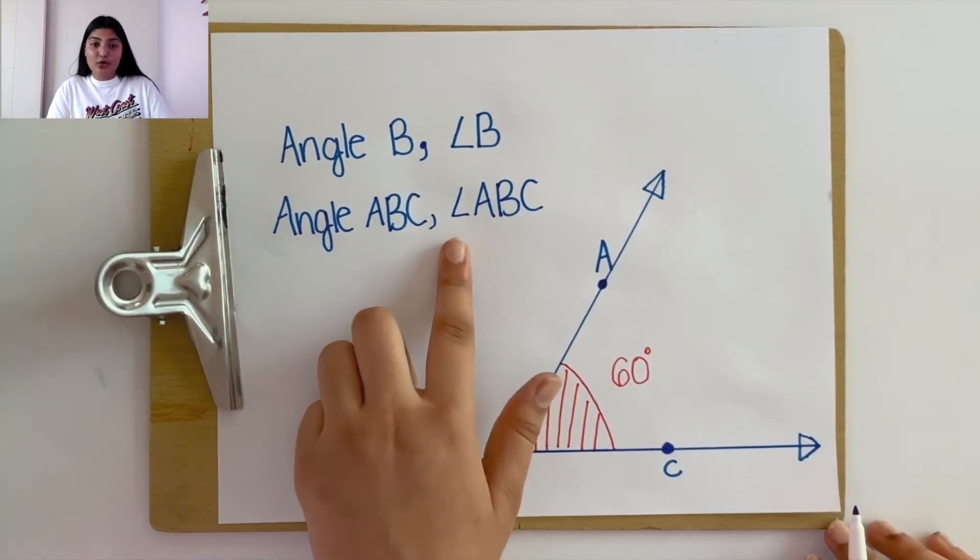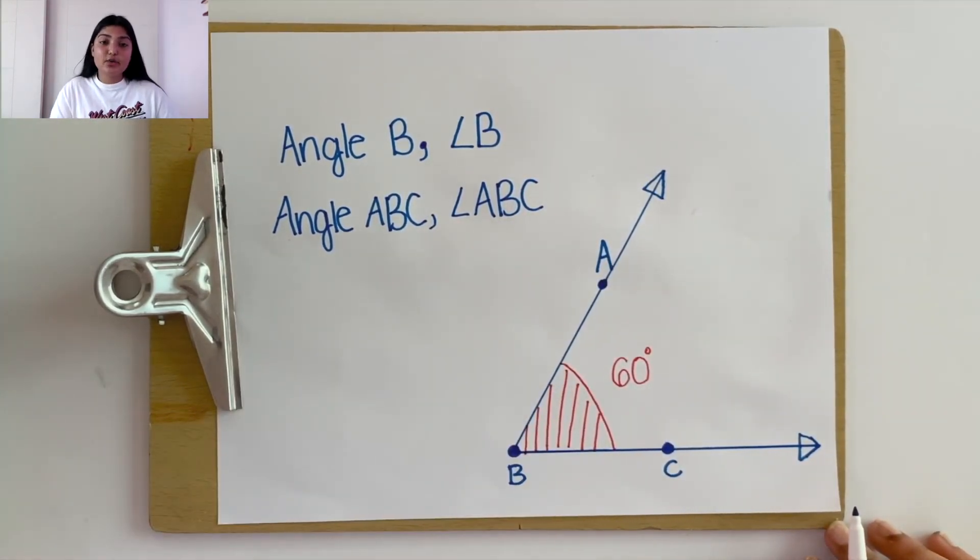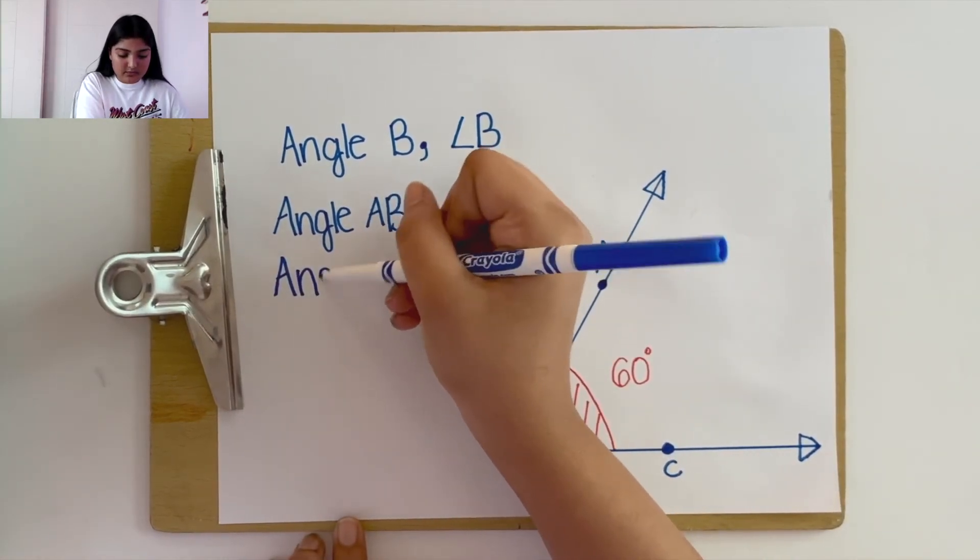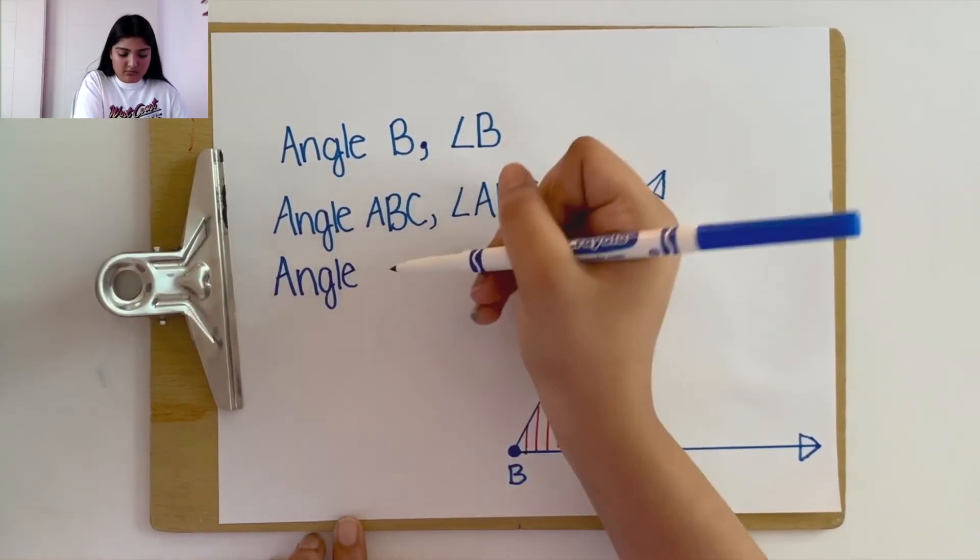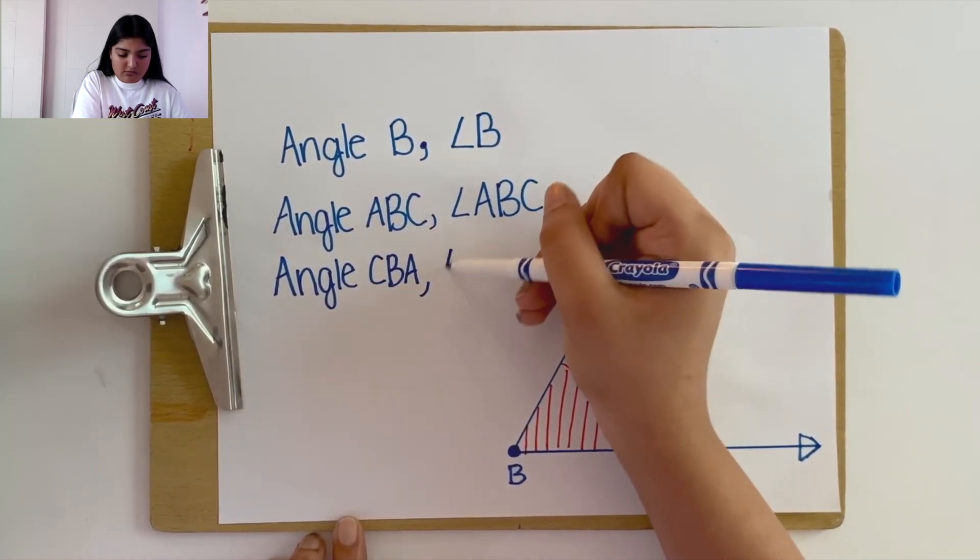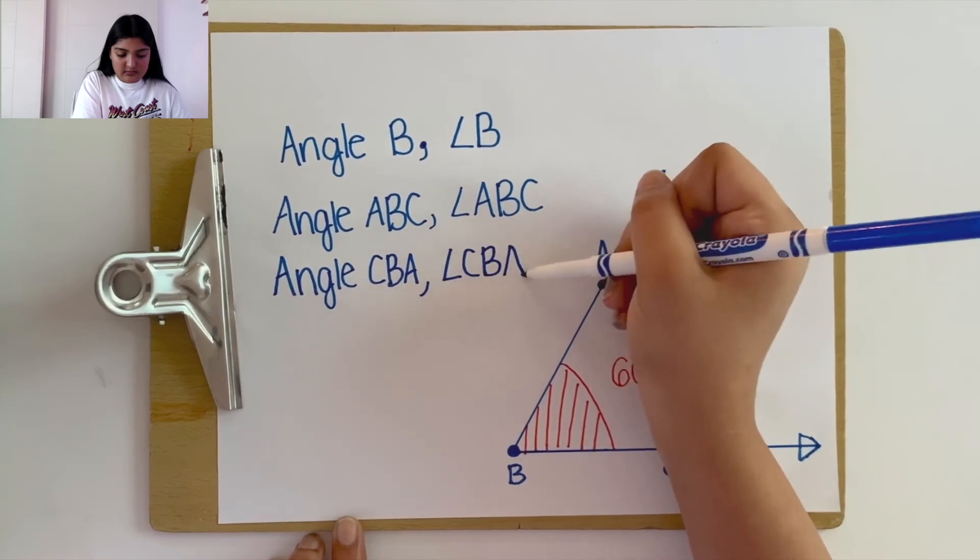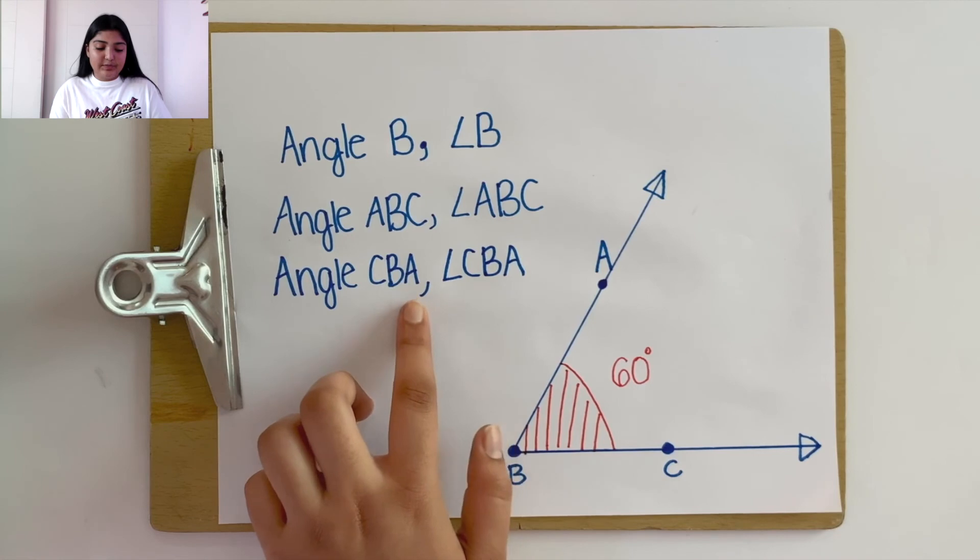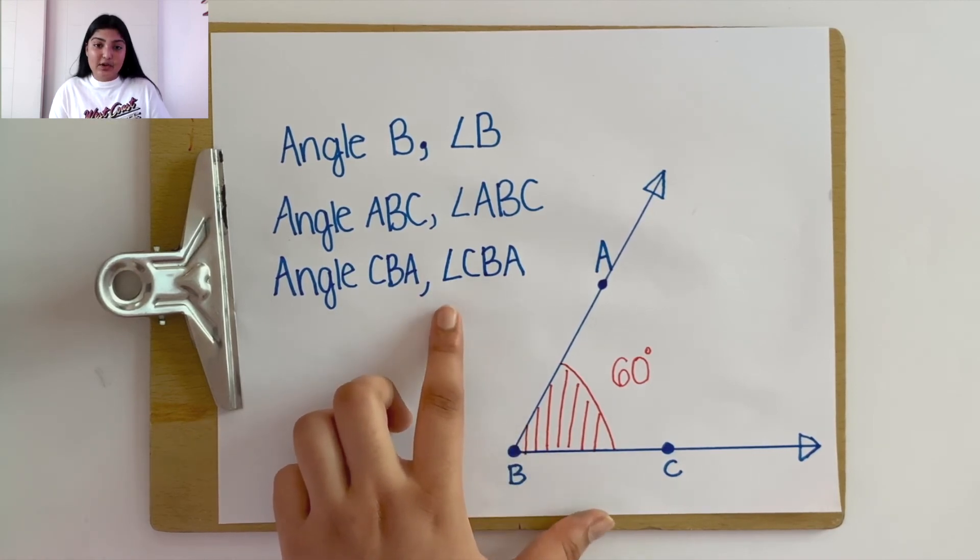We can also write it as angle ABC, or by using our symbol. And finally, we can also write it as angle CBA, or by using the angle symbol.